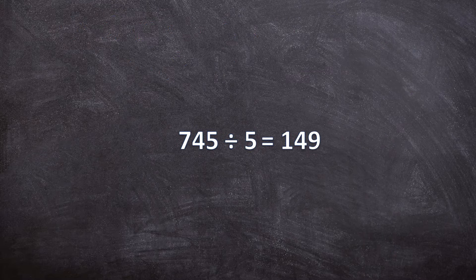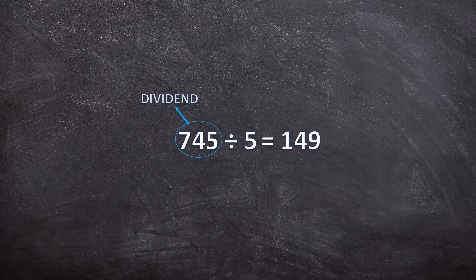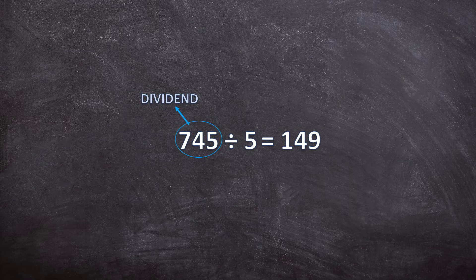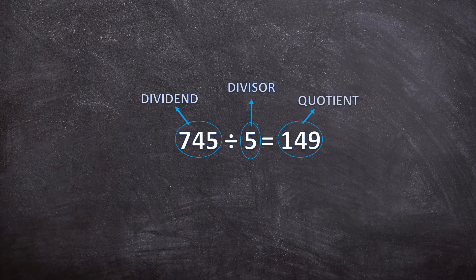Let's look at this example. The number we will be dividing is called the dividend. The number we will be dividing with is called the divisor, and the answer is called the quotient.